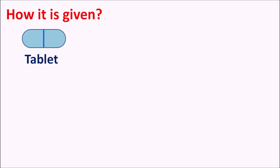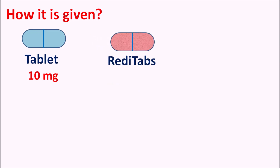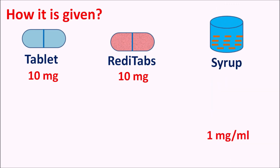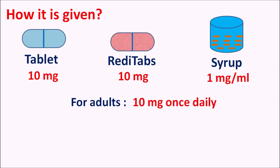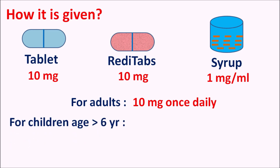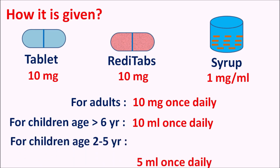Loratadine is available as a tablet at a strength of 10 mg and also as rapidly disintegrating tablets (RDTs), which disintegrate immediately when placed in the mouth and should then be swallowed. It is also available as a syrup at 1 mg per ml. The dose depends on the age of the patient. For adults, loratadine is given as 10 mg once daily. For children older than 6 years, it is given as syrup 10 ml once daily, which contains 10 mg. For children aged 2 to 5 years, it is given as 5 ml once daily.